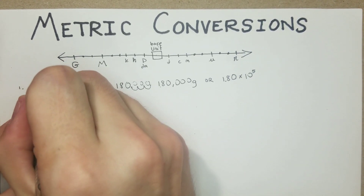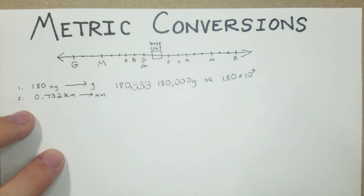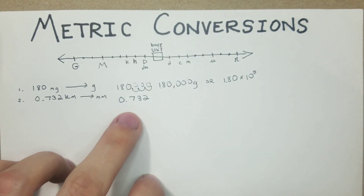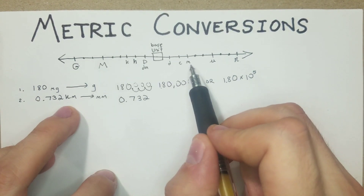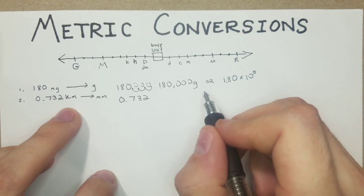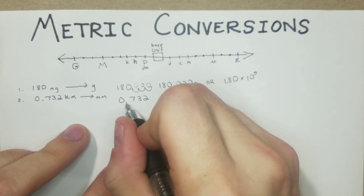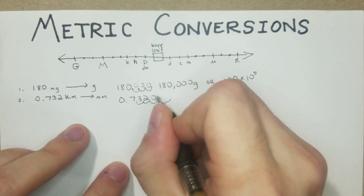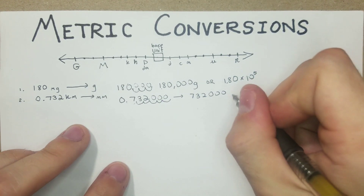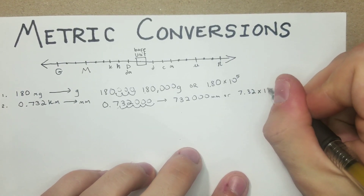Next one: convert 0.732 kilometers to millimeters. Same strategy — write out the number, check where km is on the number line and where millimeters is. That's one, two, three, four, five, six spaces to the right. So moving six spaces: we get 732,000 millimeters, or 7.32 times 10 to the fifth.